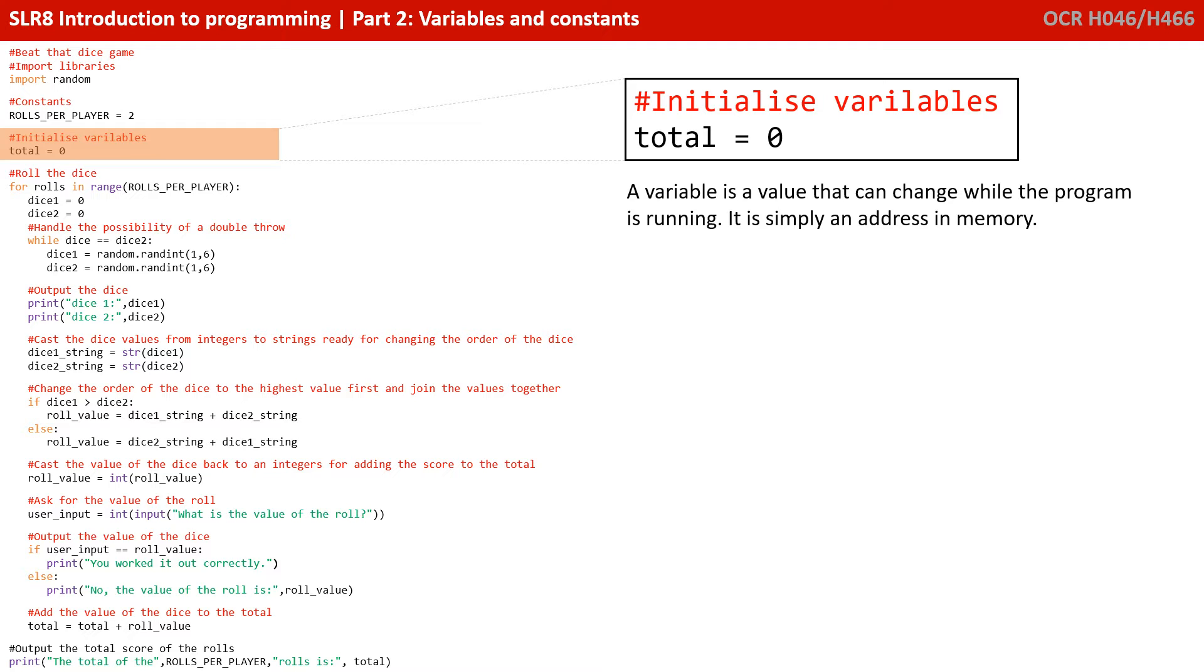Now every variable requires a data type, but in Python, unlike most languages, we don't actually have to declare our data type first. Python works it out based on the value you initially give it. So here we've said total equals 0, so it assigned the data type integer to the variable total.